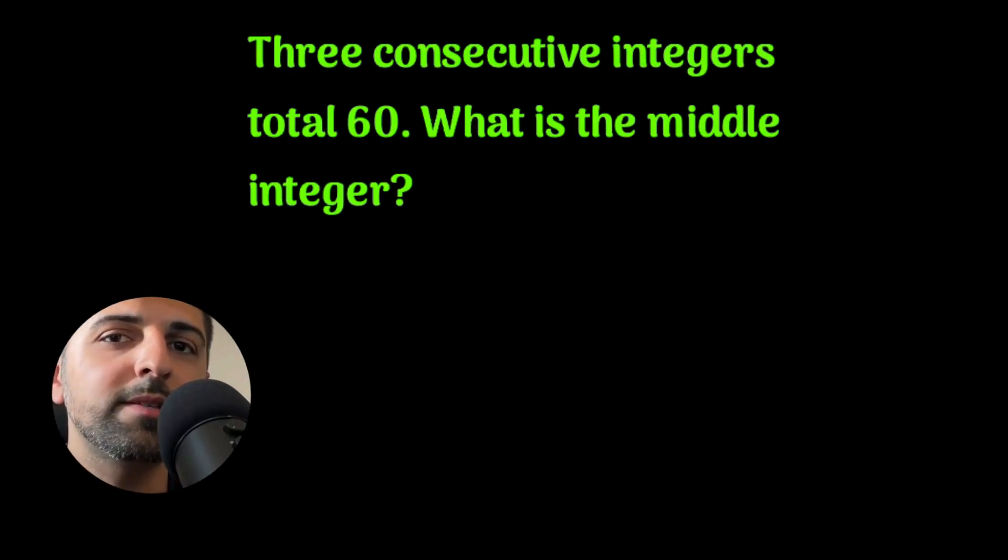The sum of three consecutive integers is 60. What is the middle integer? Here's what I do.